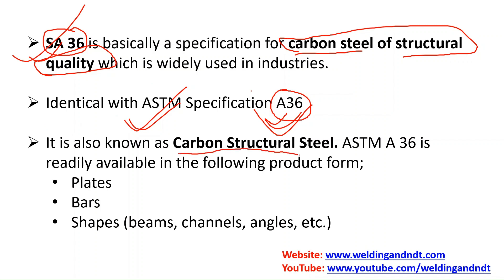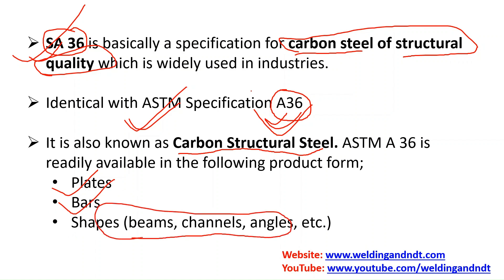SA36 is also known as carbon structural steel and it is readily available in various different product forms, like plates. You can see SA36 steel plates, bars made of SA36 steel, and various shapes like beams, channels, and angles manufactured from SA36 steel. So SA36 steel is readily available in many different product forms.